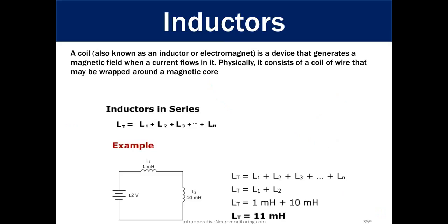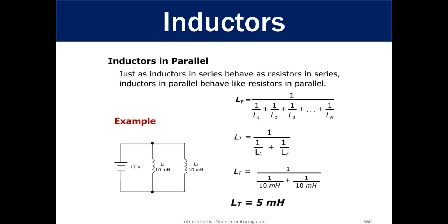Inductors. A coil, also known as an inductor or electromagnetic source, is a device that generates a magnetic field when a current flow is in it. Physically, it consists of a coil of wire that may be wrapped around the magnetic coil core. So an inductor in series is L T equals L1 plus L2 out to how many inductors are in a row. Inductors in parallel, just as inductors in series behave as resistors in series, inductors in parallel behave like resistors. So remember that resistors is opposite of capacitors and resistors are the same as inductors as far as these equations are concerned.